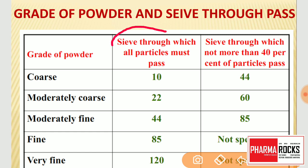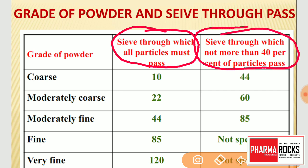There are two key criteria: a sieve through which all the particles must pass, and a sieve through which not more than 40% of particles pass. After size reduction, we get large-side particles which are separated into different sizes. After that, we separate them using various size separators. For size separation, we mainly use sieves.